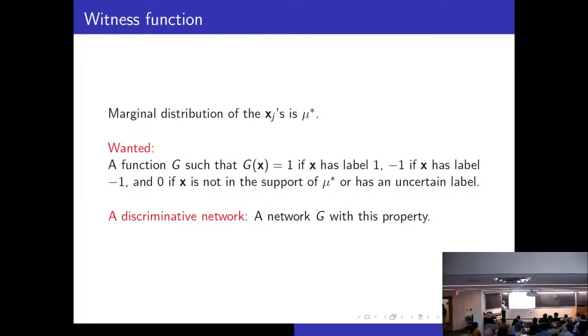So we define what is called a witness function. So once more the marginal distribution of X_j is μ*. A witness function is this. It is 1 if X is label 1 and minus 1 is label minus 1 and 0 if X doesn't have a label. And then a discriminative network is a network G with this property. By the way, I am going to talk about Hermite polynomials. But because of the Mahler identity, the Hermite polynomial can be implemented as a Gaussian network exponentially rapidly. So whether I talk about network or Hermite polynomials, they are one and the same thing.